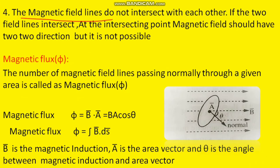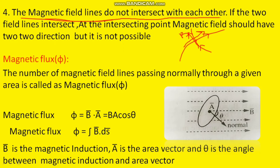The fourth property is that magnetic field lines do not intersect with each other. If two field lines were to intersect, we could draw tangents for both lines at the point of intersection, giving two directions for the magnetic field at that single point. But the magnetic field at a particular point can have only one direction — two directions are not possible. That is why field lines never intersect with each other.